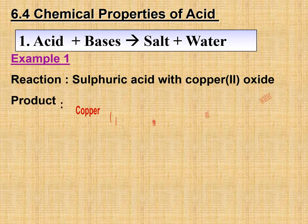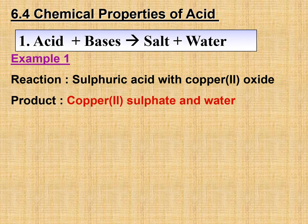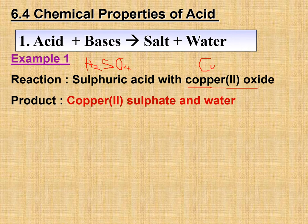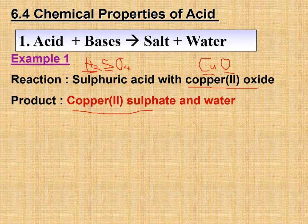For example, we have sulfuric acid with copper oxide. The product is copper sulfate and water. Sulfuric acid is H₂SO₄ — you should have memorized that. For copper oxide: Cu²⁺ combined with O²⁻ gives CuO. To produce copper sulfate, copper is the positive ion and sulfate is the negative ion, so copper combines with sulfate.